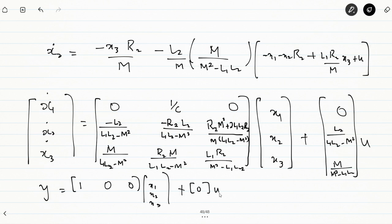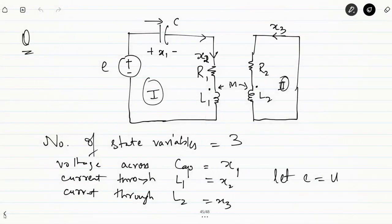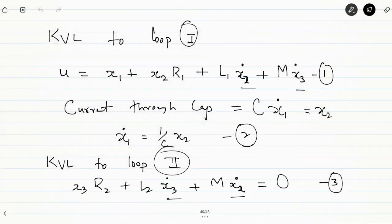The key point is that when generating KVL equations for magnetically coupled circuits, you must consider the effect of mutual inductance — the voltage induced in loop 1 due to current in loop 2, and vice versa, depending on the mutual inductance M. We have done two examples today: a multiple input multiple output system, and a magnetically coupled circuit.